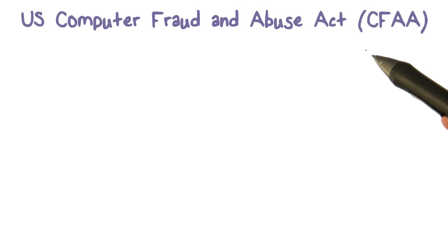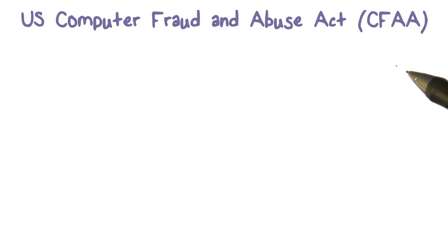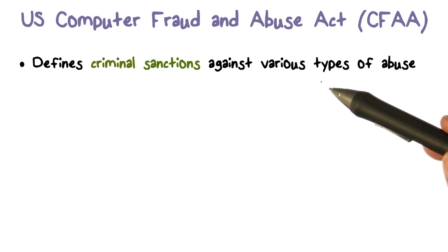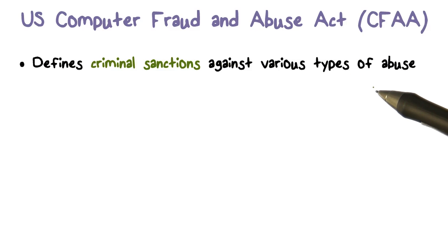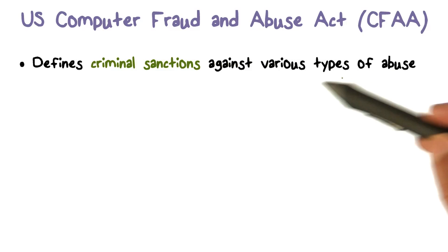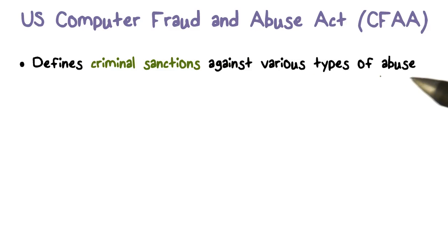We're going to talk about a couple of the US laws related to cybercrime and illegal online activities. The first one is the US Computer Fraud and Abuse Act. The goal of this law was to define what is criminal when it comes to things you do online — various types of online abuse — and then define criminal sanctions against those activities that constitute abuse or fraud.